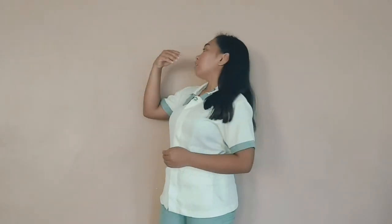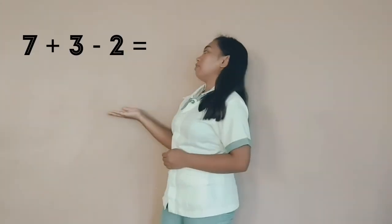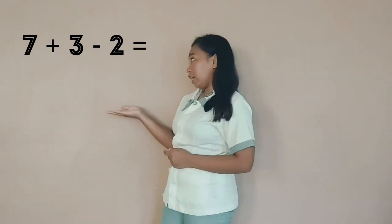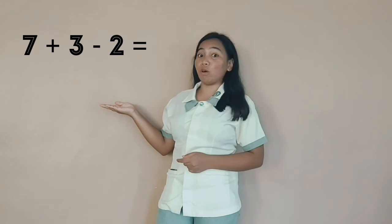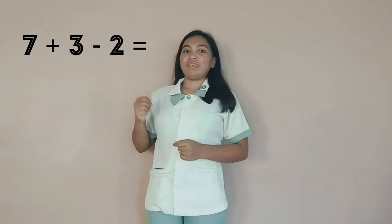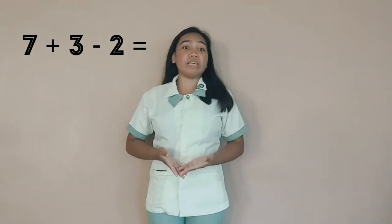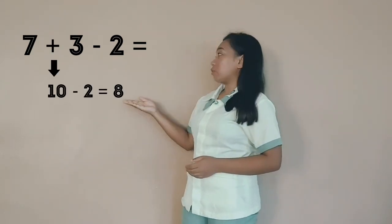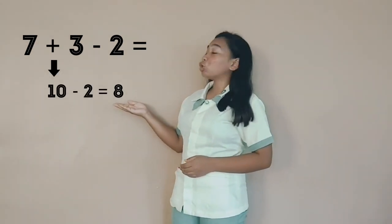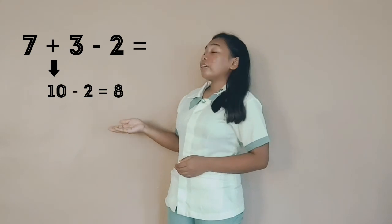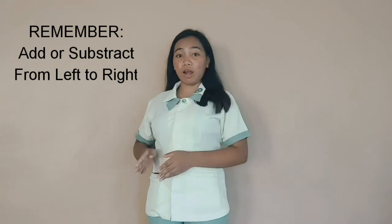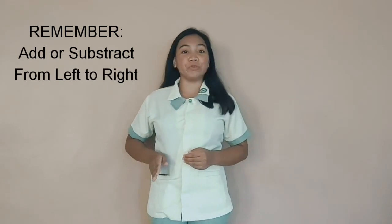Here is another sample. 7 plus 3 minus 2 is equal to... Let's solve it from left to right. So, 7 plus 3 is equal to 10, minus 2 is equal to 8. Remember, add or subtract from left to right.